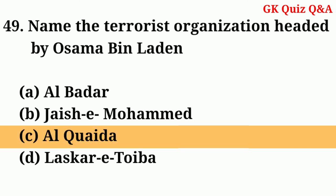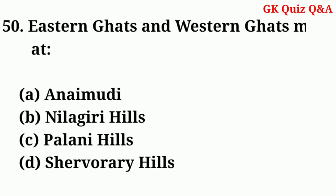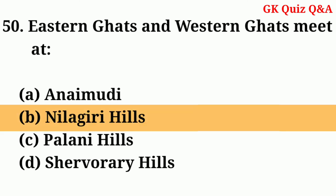Name the terrorist organization headed by Osama bin Laden — Answer: C — Al Qaeda. Eastern Ghats and Western Ghats meet at — Answer: B — Nilgiri Hills.